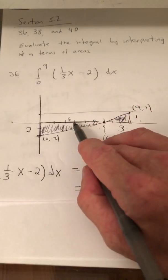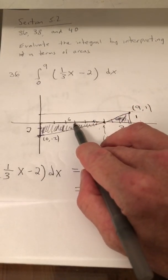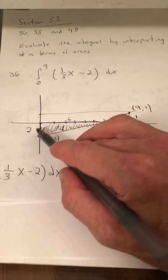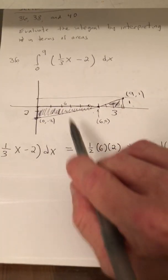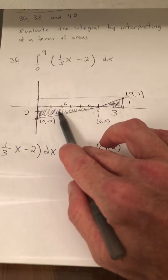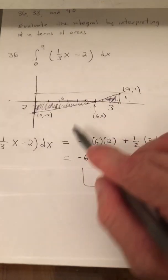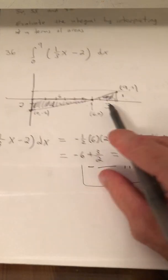Remember the area of a triangle is 1/2 base times height. So the base of this triangle we can say is 6 and the height is 2. So this part is going to be negative because this is below the x-axis. So we have negative 1/2, 6 times 2.